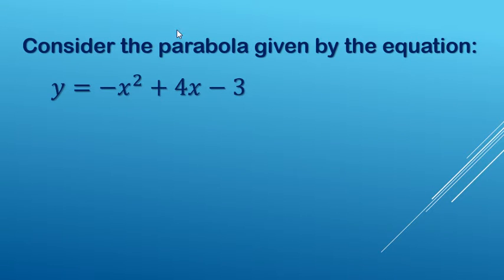All right, so here we're going to be looking at the parabola given by this quadratic equation. We need to look at the coefficients: a is negative 1, b is 4, and c is negative 3.